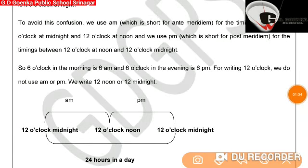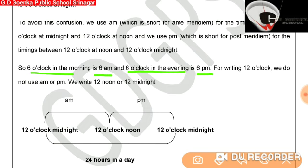So now we can easily say that 6 o'clock in the morning will be 6 AM, because AM is used for the morning and night. And 6 o'clock in the evening will be written as 6 PM, because PM is used for evenings and afternoon.